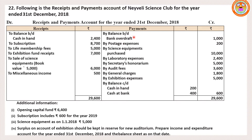Postage expenses is a revenue transaction — debit side. Science equipment purchased is an asset — capital transaction, won't appear in income and expenditure account. Laboratory expenses — debit side, revenue transaction. Secretary's honorarium is revenue expenditure — debit side. Audit fees — recurring, revenue transaction — debit side. General charges — revenue transaction — debit side. Exhibition expenses and exhibition fund received will be shown while preparing balance sheet liability side. Closing balance will be shown in balance sheet asset side.